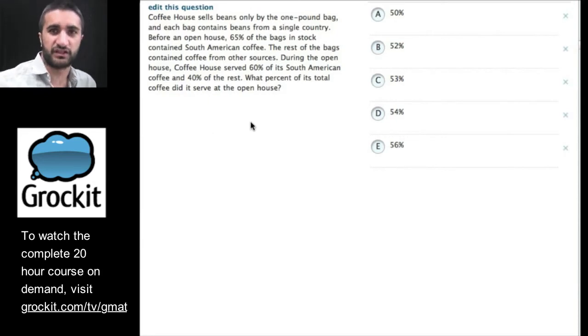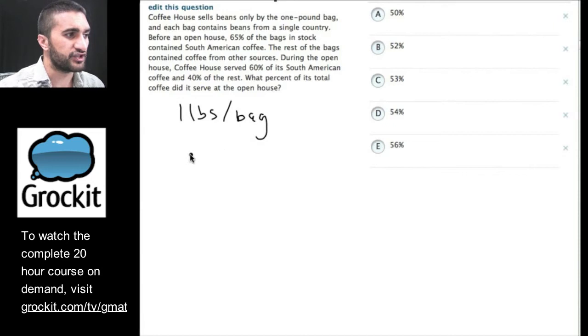So, as you could expect, this question, like a lot of GMAT questions, is written as a word problem. It's not presented to you in terms of math equations. So, what we want to do is parse the language. Remember, that's what we said on math questions - parse the language, break it down, and use our scratch paper to do the remembering, and use our brains to do the thinking. This is a process that I use a lot on percent questions. Let's take a look. Coffee House sells beans only by the one-pound bag, and each bag contains beans from a single country. A lot of times with percent, if you can start with 100, you can break down the percents into actual numbers, and it's easier to think about. So, let's start like that.